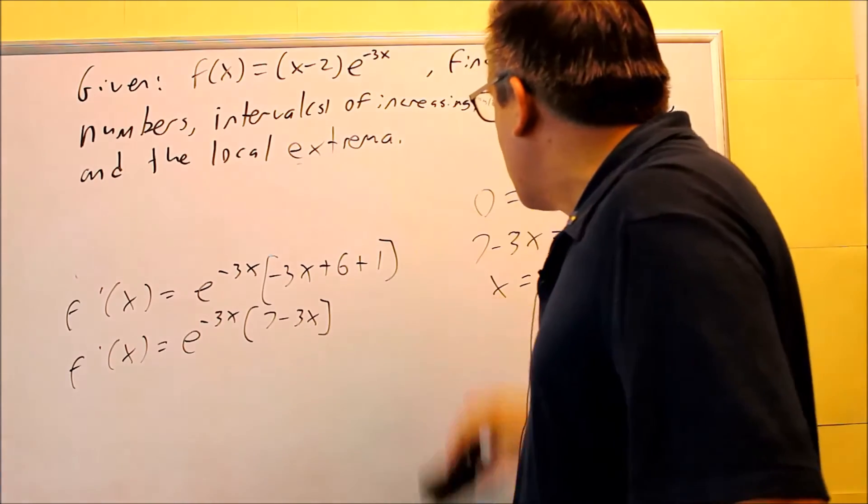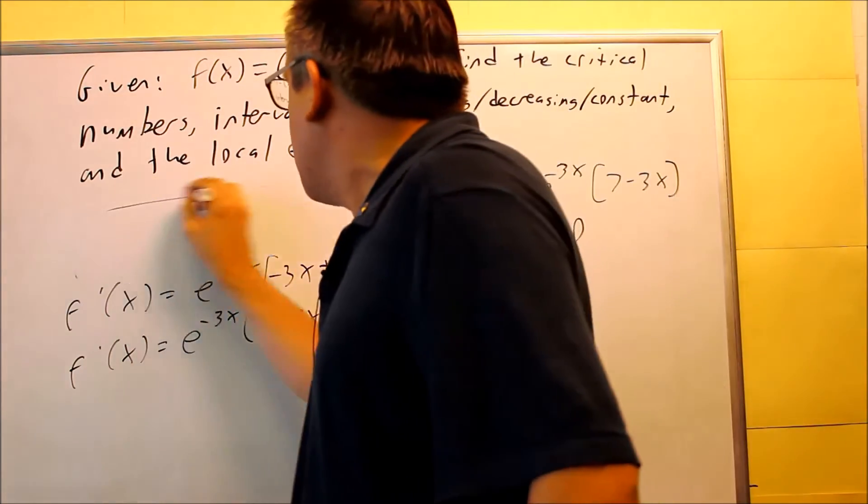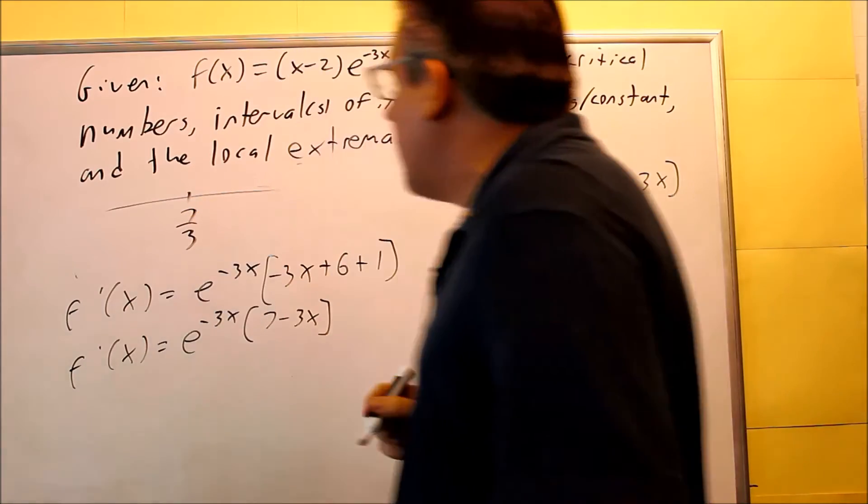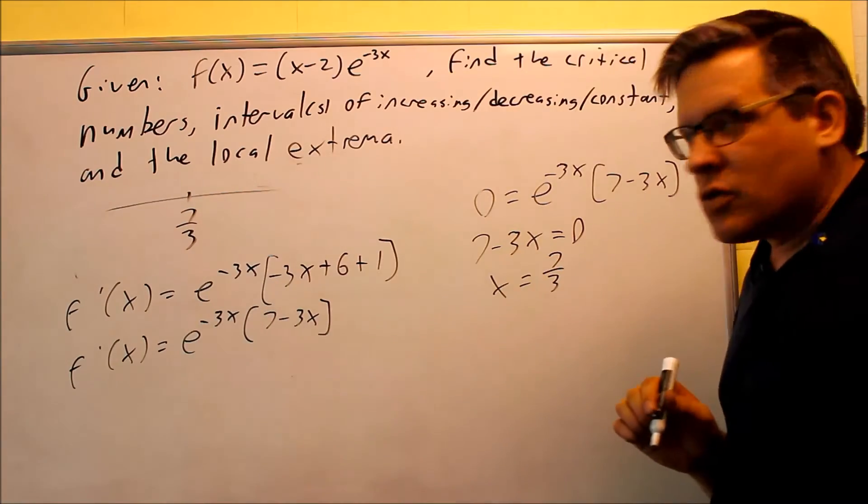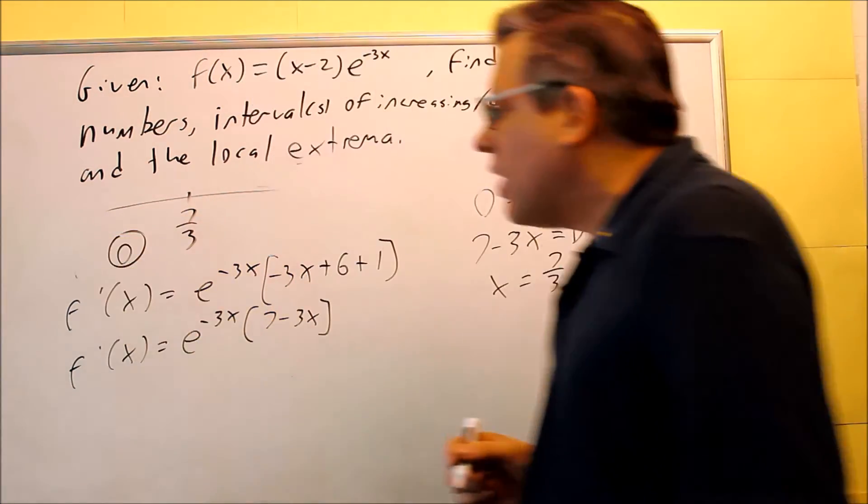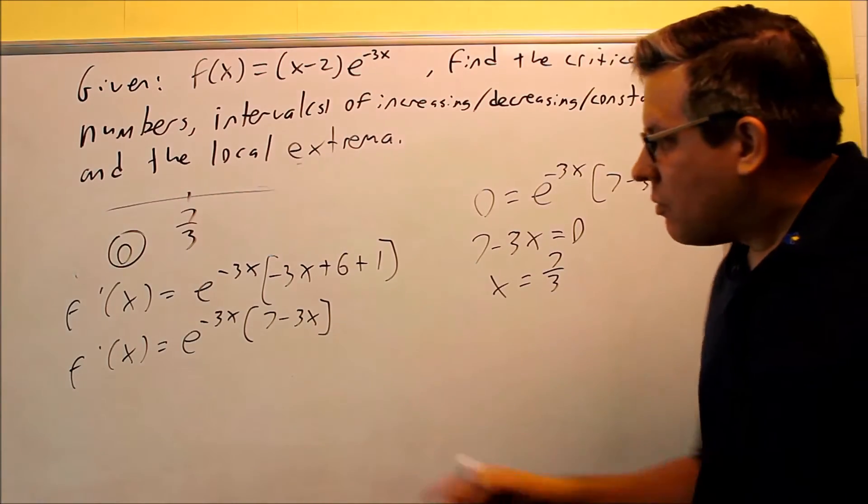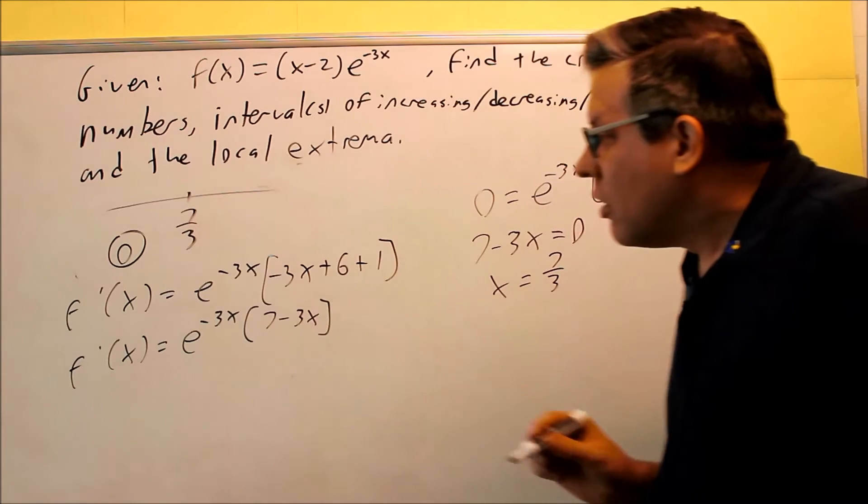So what it'll look like is I have a number line with a 7 thirds here. So I have a number line with 7 thirds. I'm going to test the number before 7 thirds and after 7 thirds. 0 is definitely an easy number to try here because I know that e to 0 is 1, so I'll make it easy to plug in.